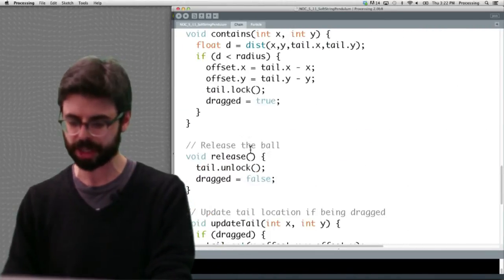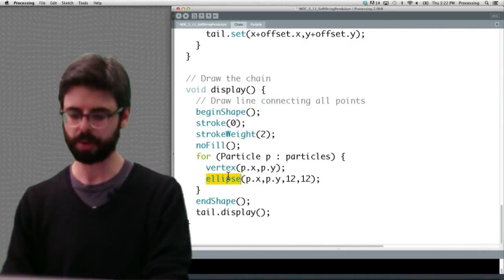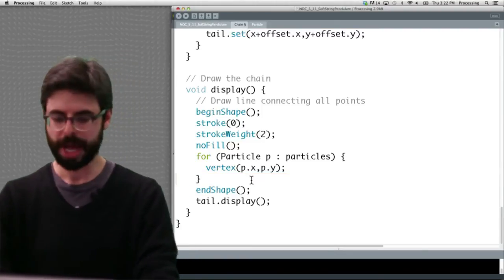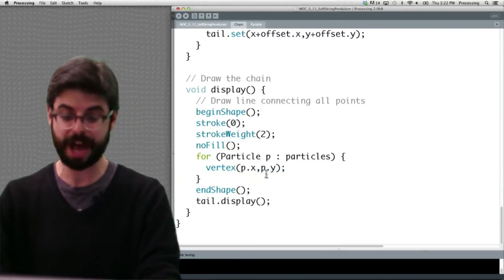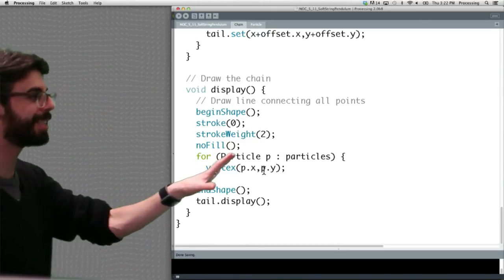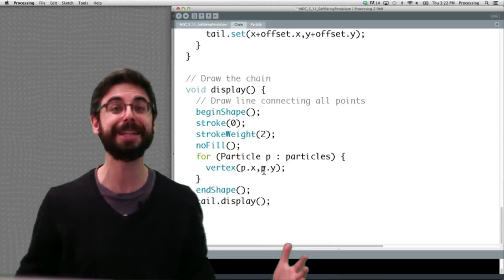We can choose to draw it in any way we want. I can go into this chain class which is drawing circles. I can take them out and just connect all the particles with vertices.